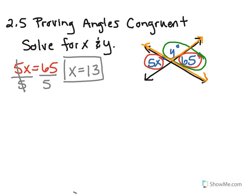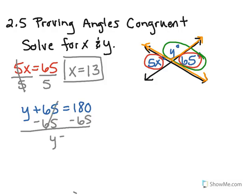So I'm going to go ahead and write that out as well. So I'm going to say y plus 65 degrees is equal to 180. And then of course I can solve this just like any other equation. So subtract 65 minus 65. And then that means that y is equal to 115.